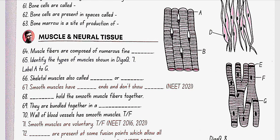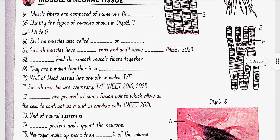Skeletal muscles are also called striated muscles or voluntary muscles. Smooth muscles have fusiform ends and don't show striations. Cell junctions hold the smooth muscle fibers together. They are bundled together in a connective tissue sheath. Wall of blood vessels have smooth muscles.